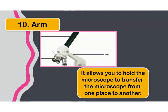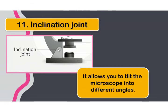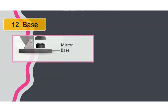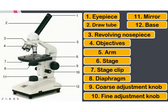Next, the arm. The arm allows you to hold the microscope to transfer it from one place to another. Then the inclination joint. The inclination joint allows you to tilt the microscope into different angles. And then the base. The base supports the entire body of the microscope.